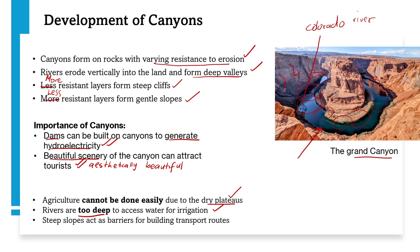Another limitation is that the rivers are too deep to access water for irrigation. If you try to get water from the rivers, you would have to climb down deep valleys due to the vertical erosion. This makes it very difficult to access water for watering crops or for irrigation purposes.